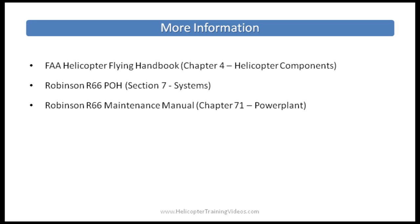If you're looking for more information, check out the Helicopter Flying Handbook by the FAA, under Chapter 4 — Helicopter Components. You can also look at the Robinson R66, which is a turbine helicopter; the POH or Pilot Operating Handbook is available online at the Robinson website under Section 7 for systems. You can also download the R66 maintenance manual and look under Chapter 71 Power Plant for more information. Any questions or suggestions, please get back to us — thanks for listening.